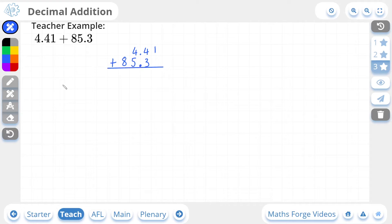Let's rule off. So we'll start from the right. 1 plus nothing is just 1. 4 plus 3 is 7. Decimal point. 4 plus 5 is 9.